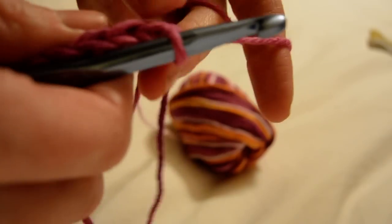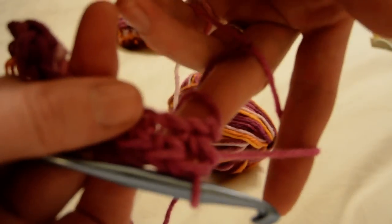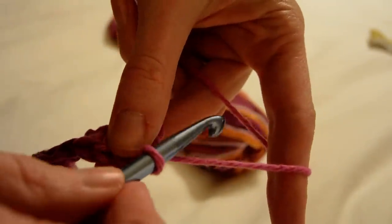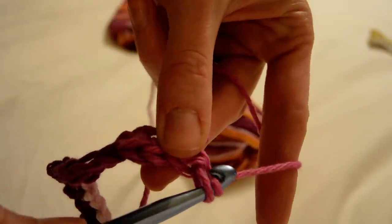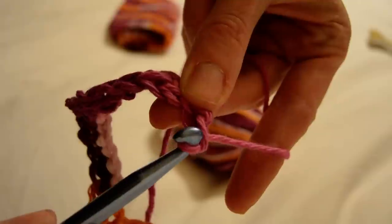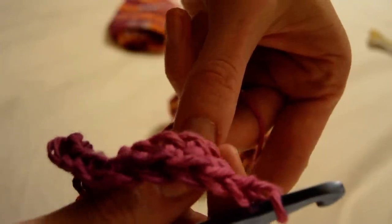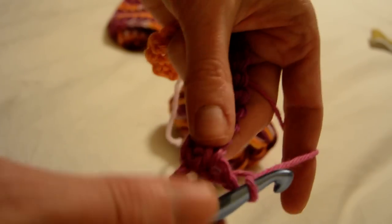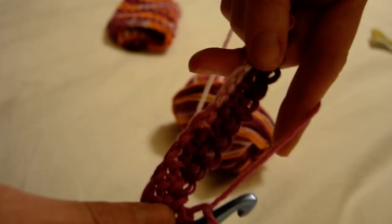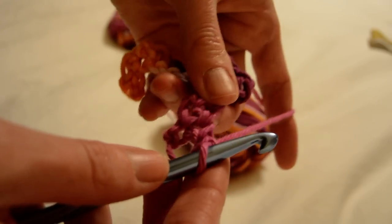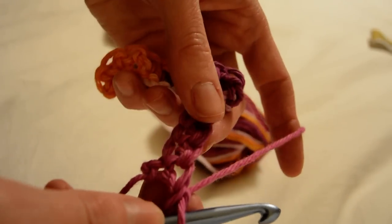We've come to the end. What you always do at the end of the row for a single crochet is you have to chain one. Then we have to turn over our work so that we can continue to crochet across. I chained one and I'm going to continue to crochet across.